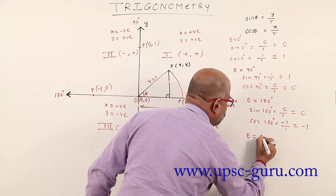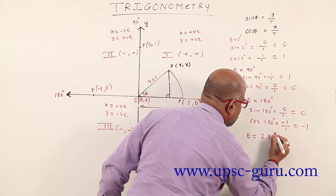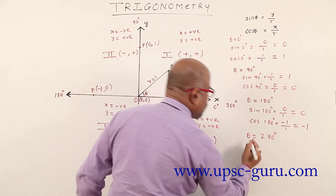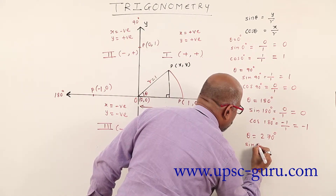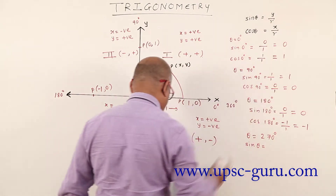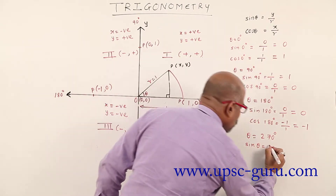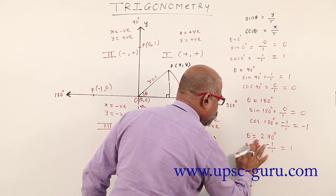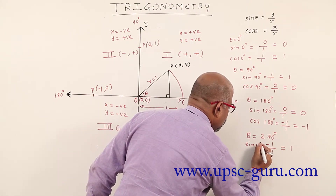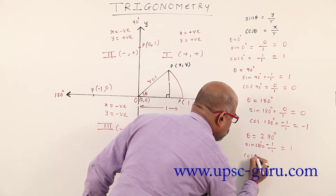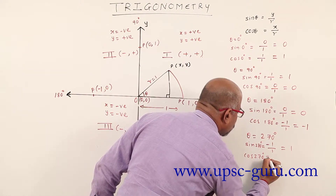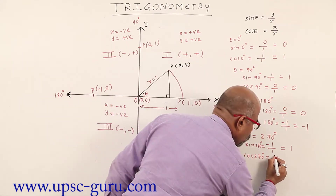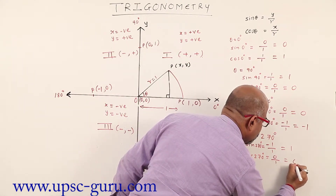When theta equals 270 degree, let us check what we get. Sin 270 degree equals y upon r — y is minus 1 upon 1, equals minus 1. Then cos 270 degree: cos is x upon r, x is 0, r is 1, answer is 0.